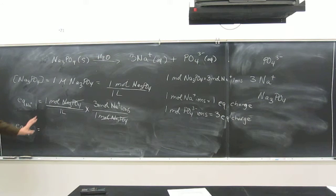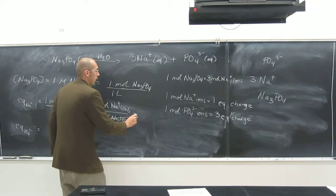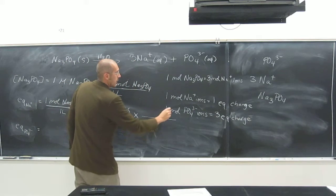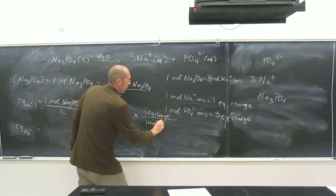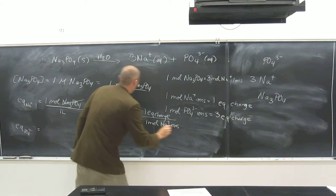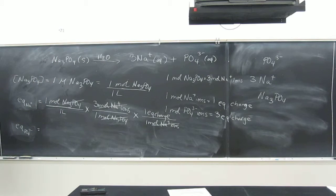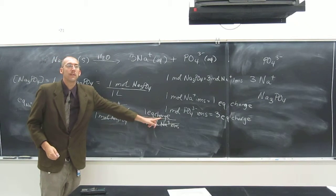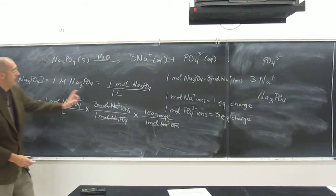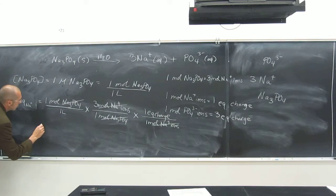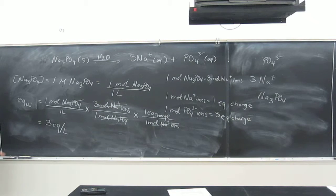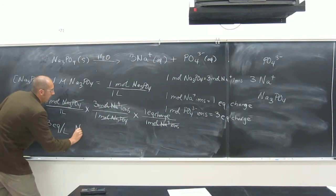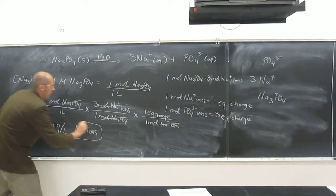Does that give us the number of equivalents of charge? No — we still need one more step. For every one equivalent of charge, it's one mole of sodium ions, so those cancel. We get units of equivalents of charge per liter. And then one times three times one equals three, divided by one — so this equals three equivalents per liter of Na⁺ ions.